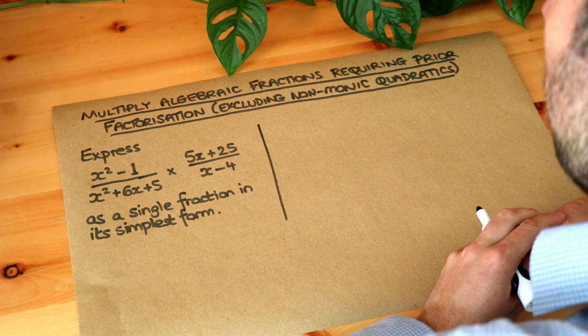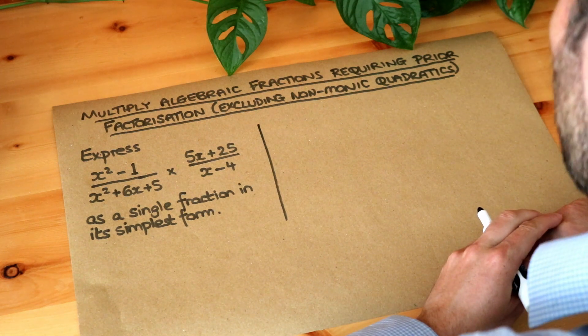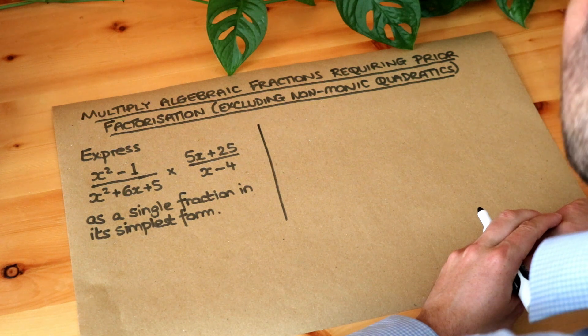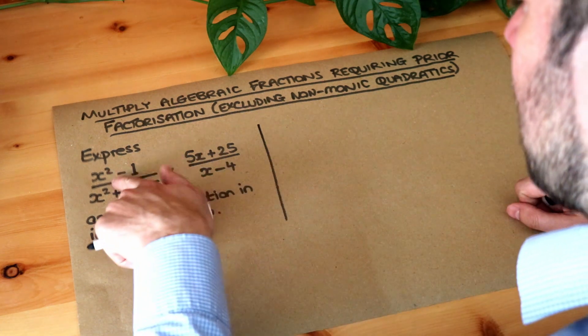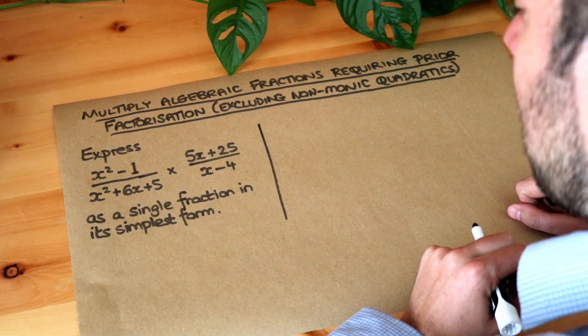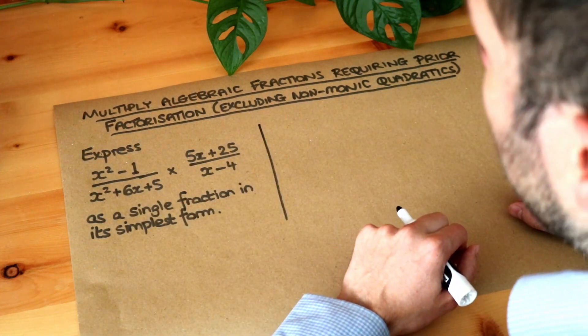Hello and welcome to this Dr. Frost video on multiplying algebraic fractions requiring prior factorization, excluding non-monic quadratics. Let's read the question. We want to express this multiplication of algebraic fractions as a single fraction in its simplest form.